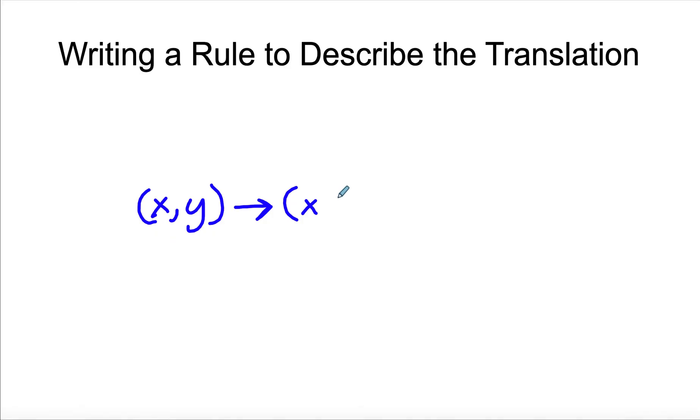And then we're going to tell what mathematically happens to X. If we move it right, we'd put plus. If we move it left, we'd put minus. So let's just say we're going to do plus three. So that means the X value is going to move to the right three. So that means we're either adding three to the X value or moving it right three.